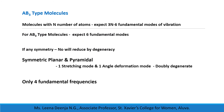Next we consider AB3 type molecules. For a molecule with N atoms, there will be 3N minus 6 fundamental modes of vibration. In an AB3 type molecule there are 4 atoms, so we expect 3×4 minus 6 = 6 fundamental modes. But if there is any symmetry, the number of fundamental modes decreases by the number of degeneracy. In symmetric planar and symmetric pyramidal structures, there will be 1 stretching mode and 1 angle deformation mode that are doubly degenerate, so there will be only 4 fundamental modes of vibration.